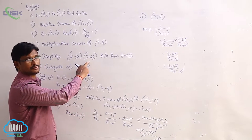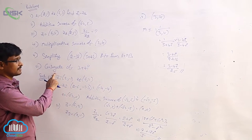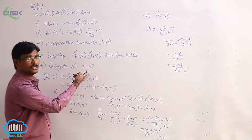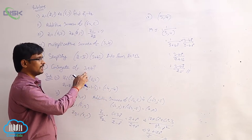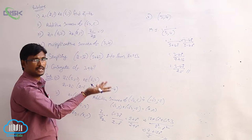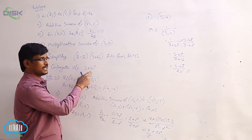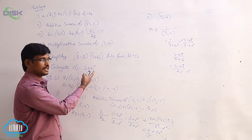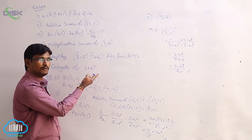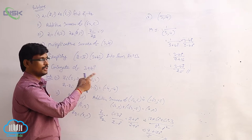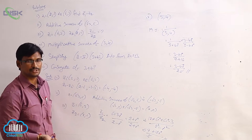For the conjugate of 3 + 4i: when finding the conjugate, we take the opposite sign for the imaginary part. Here the imaginary part is +4, so the opposite sign is −4. Therefore the conjugate of 3 + 4i is 3 − 4i.